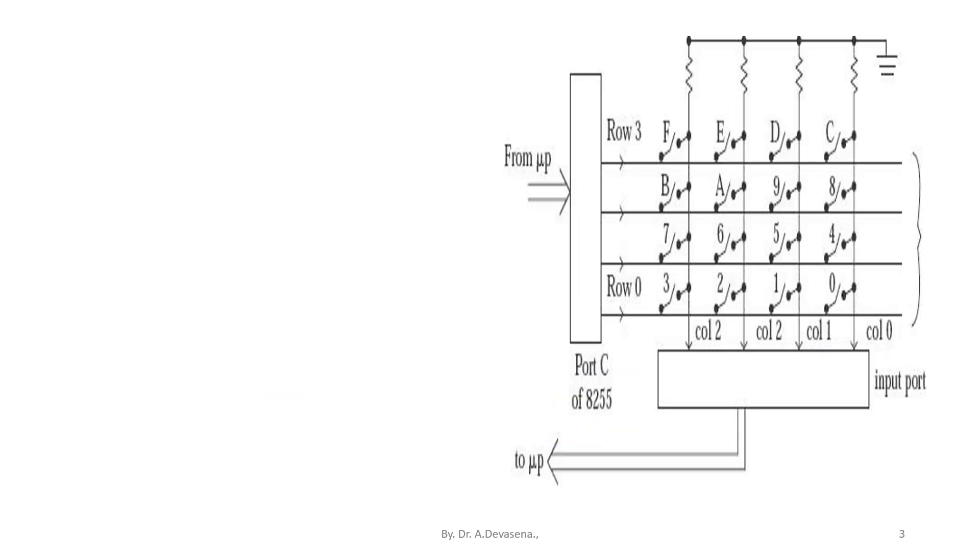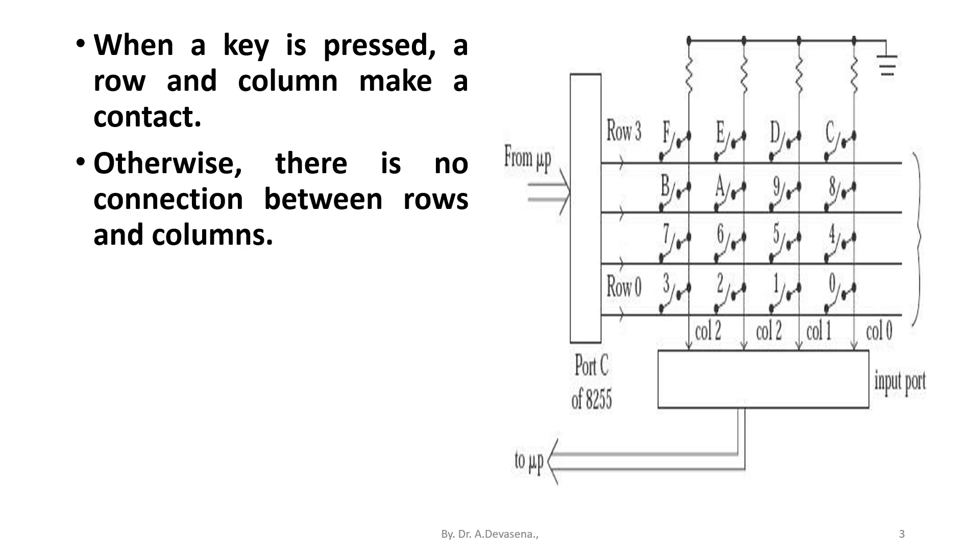When a key is pressed, a row and a column make a contact. Otherwise, there is no connection between rows and columns. A 4x4 matrix connected to two ports. The rows are connected to an output port and the columns are connected to an input port.